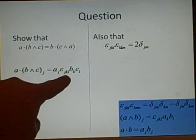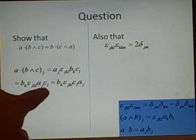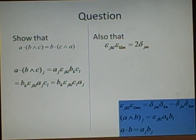So it's aj, epsilon jkl, bk, cl. I hope you can see that. And then all we want to do now is we want to rearrange it into a form that looks like this. So I've put the b in front, and we've got a, c, and then we'll have to swap the c and a, so we've got b, c, a.